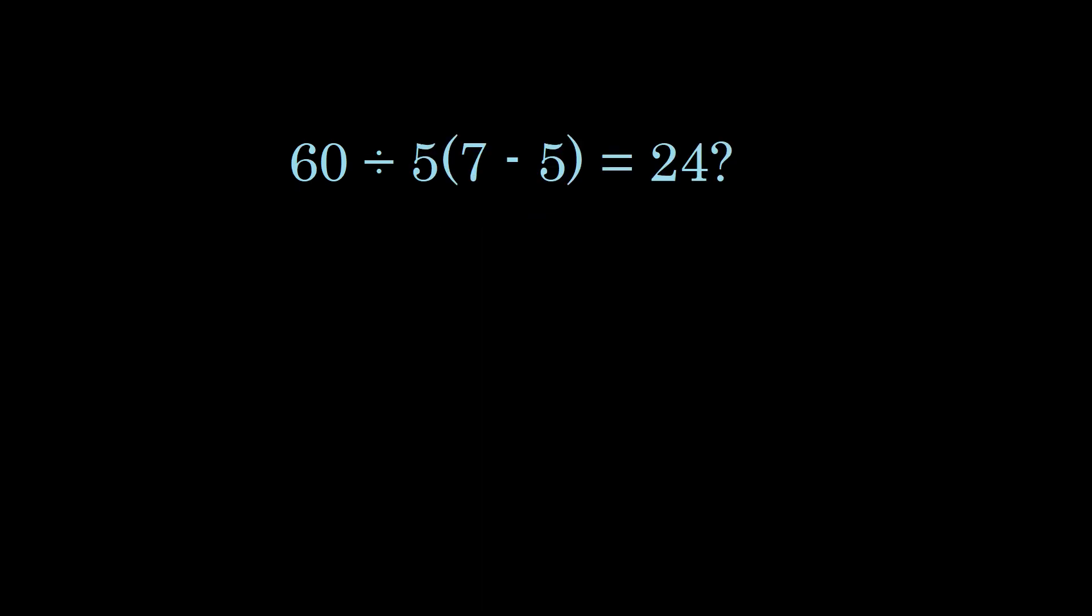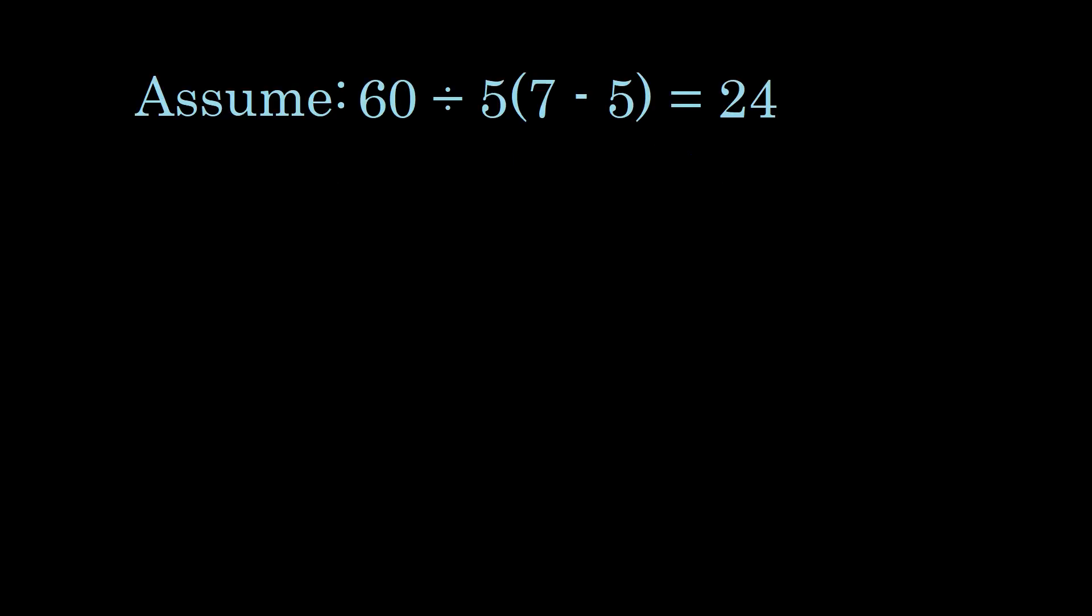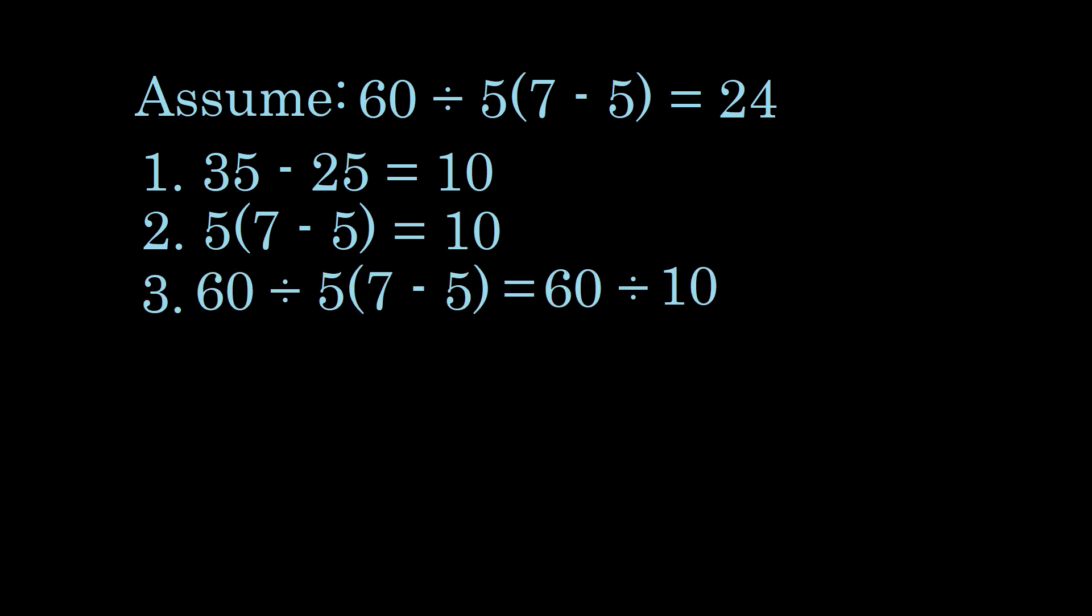But as I said earlier, I can actually prove that 60 divided by 5 parentheses 7 minus 5 end parentheses cannot equal 24. So let me go ahead and prove it. I'll use the standard proof by contradiction. In other words, let us assume that 60 divided by 5 parentheses 7 minus 5 end parentheses does in fact equal 24. Well, we've already established that 35 minus 25 equals 10. And we also know that factoring 5 out, we get 5 parentheses 7 minus 5 equals 10. With this, all we have to do now is divide 60 by both sides of this equation, and we get the original equation. 60 divided by 5 parentheses 7 minus 5 on the left-hand side equals 60 divided by 10.